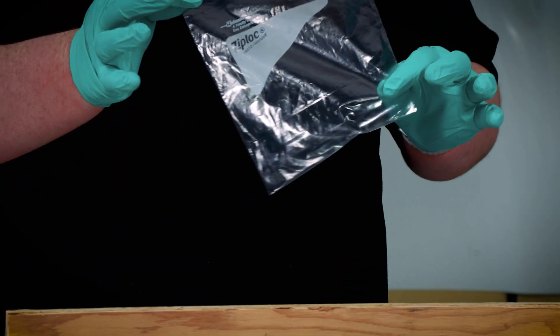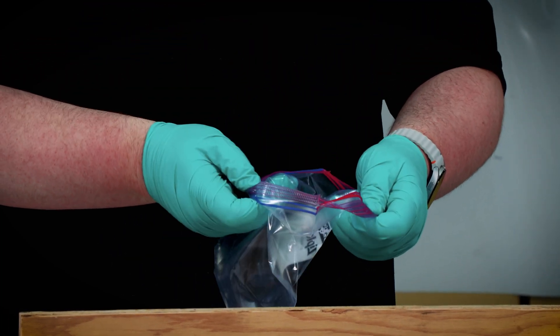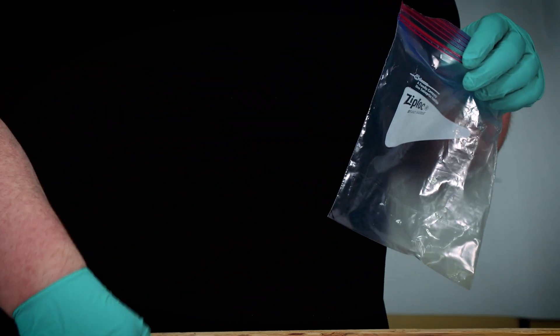Last but not least, we have a plastic bag. They're really easy to open up, fill with thickened epoxy, clip off a corner, and inject it right into your joint.